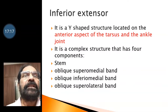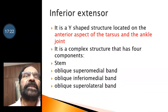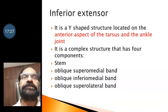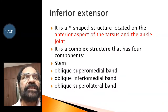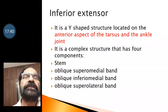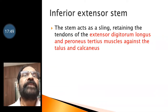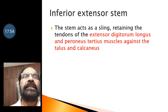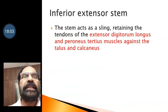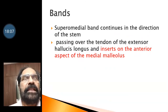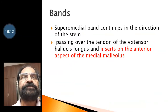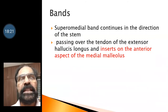Then we go to the inferior extensor retinaculum. It is a Y-shaped structure located on the anterior aspect of the tarsal bones and ankle joint. It is a complex structure that has four components: the stem, oblique superomedial band, oblique inferomedial band, and oblique superolateral band. The stem acts like a sling, retaining the tendons of extensor digitorum longus and peroneus tertius muscles against the talus and calcaneus. The superior medial band continues in the direction of the stem, passes over the tendon of extensor hallucis longus, and gets inserted on the anterior aspect of the medial malleolus.